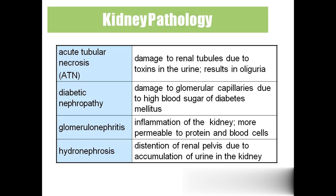Diabetic nephropathy: because of diabetes, the kidneys get damaged — due to high sugar levels in diabetes mellitus, the glomerular capillaries get damaged. That is called diabetic nephropathy. Glomerulonephritis means inflammation of the kidney ('itis' means inflammation); because of this inflammation, protein and blood also appear in the urine.